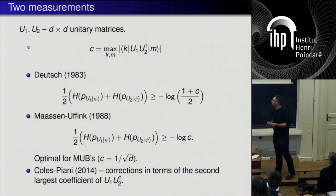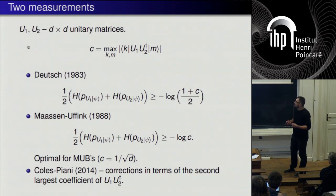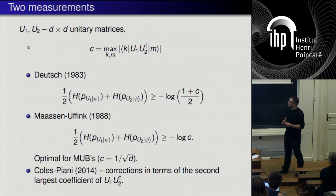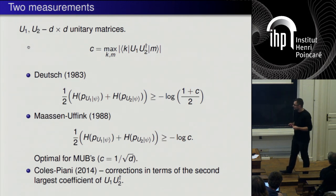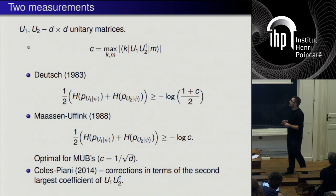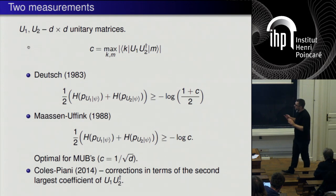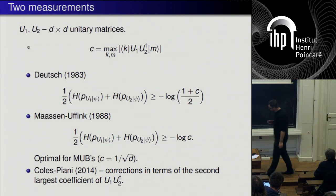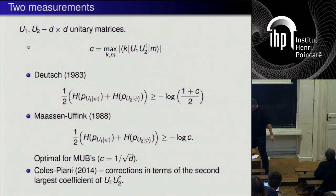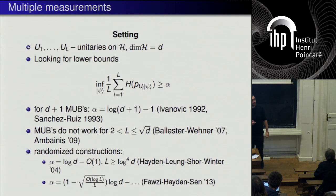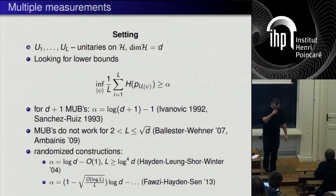Recently a lot of work has been devoted to improving this inequality in the non-extreme regime. For example, there is a result by Coles and Piani which gives a correction in terms of the second largest coefficient of the transition matrix U1 U2 adjoint. But I will not discuss this and instead pass to the setting of several measurements.